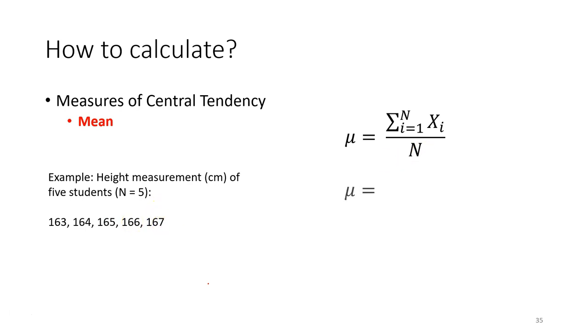First thing you need to do is sum up all the data, then divide by the number of data points. Each observation - first observation, second, third, fourth, and fifth - we want to sum from the first observation until the fifth observation. This is all the values, and after that divide by the number of observations.